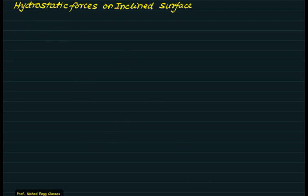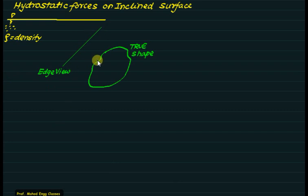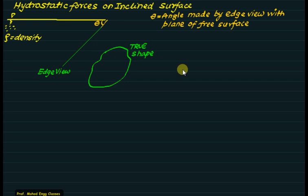In this video, we will see the derivation of how hydrostatic forces act on an inclined plane. Consider a free surface level with a tank containing liquid of density rho, assumed constant over the given depth. Consider one inclined plane — the true shape of this plane, if rotated 90 degrees, gives an edge view. This edge view, if extended, meets the free surface level at an angle theta.